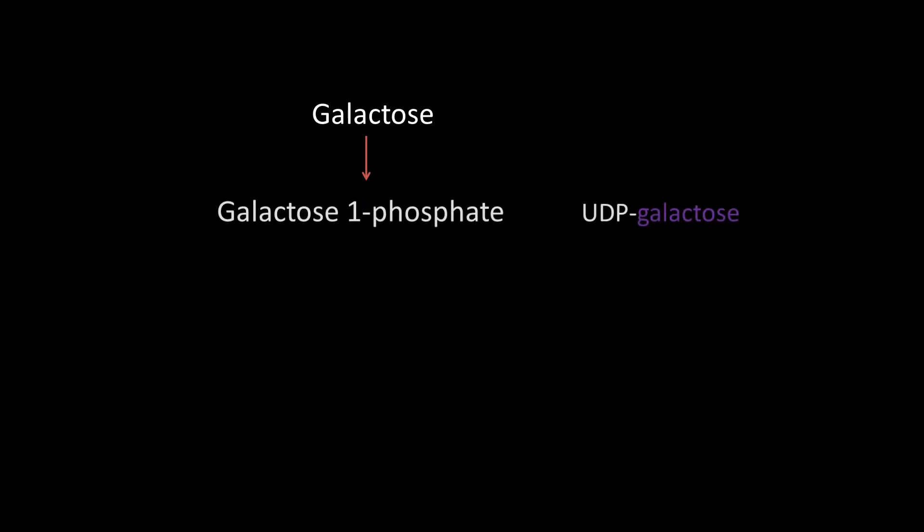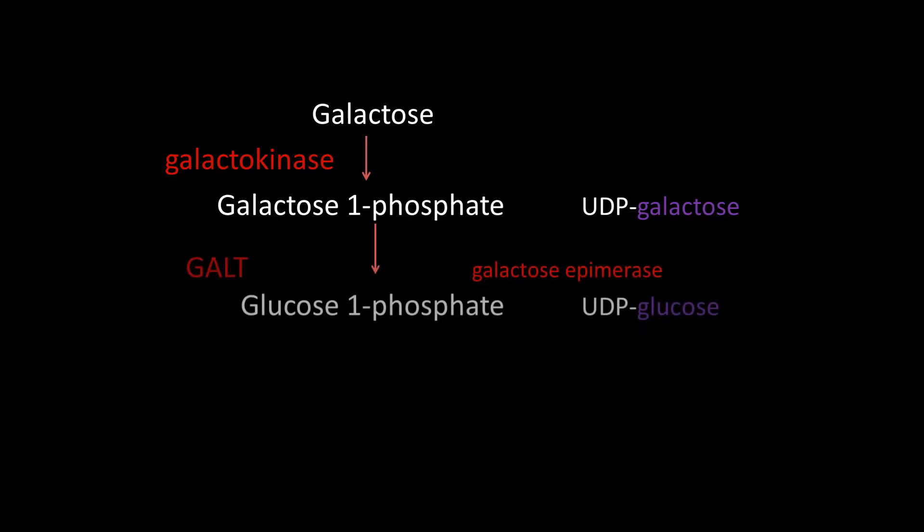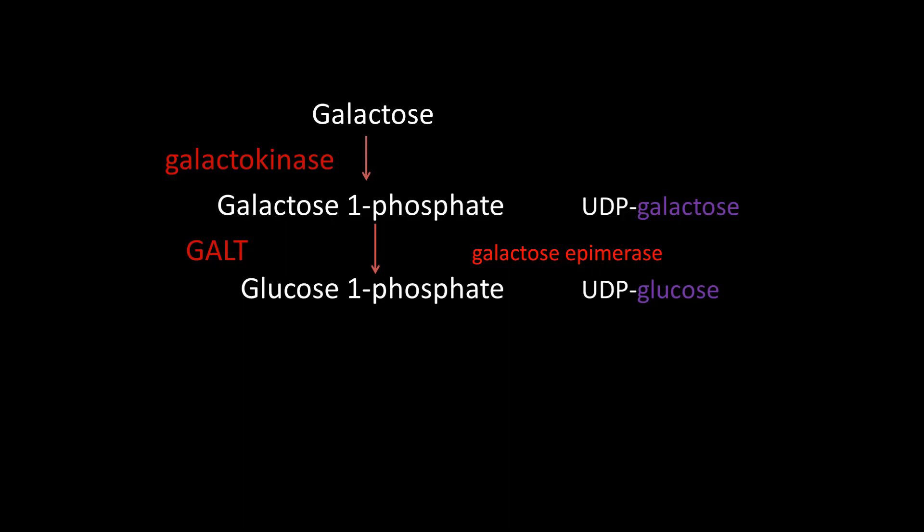Galactose is then converted to glucose and enters the glycolysis pathway. First, lactose is hydrolyzed to galactose and glucose. Then galactose is converted to galactose-1-phosphate by the enzyme galactokinase — remember this enzyme, as it is important in this condition. Galactose-1-phosphate is then converted to glucose-1-phosphate by the enzyme GALT, which stands for galactose-1-uridyl transferase.